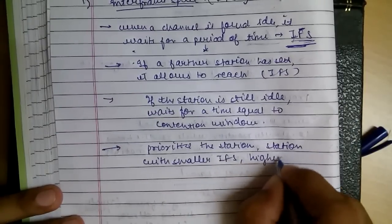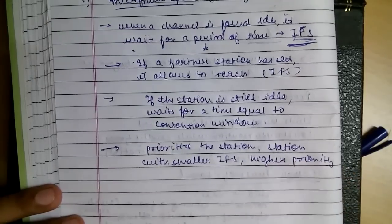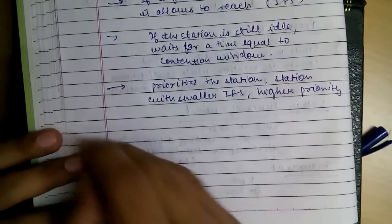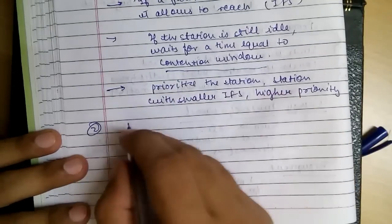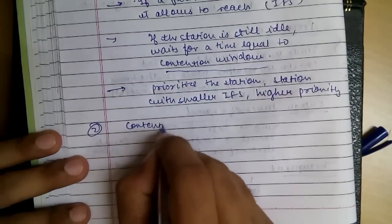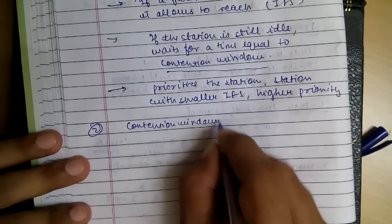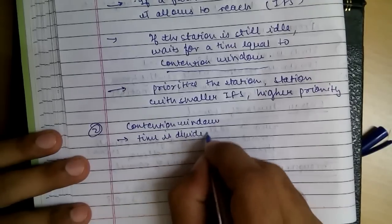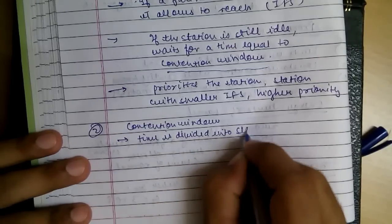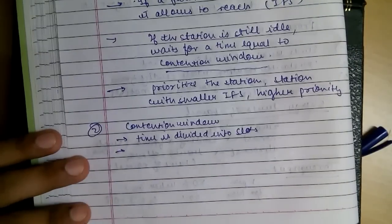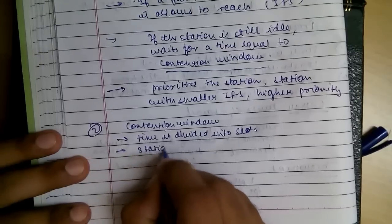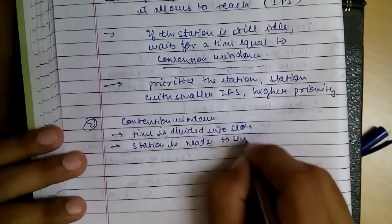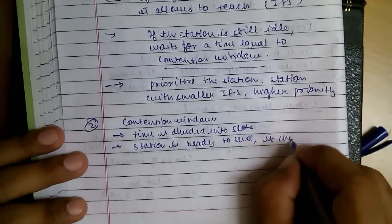So this is the first strategy. The second one is contention window. Contention window is divided into slots, and when a station is ready to send, that is after this IFS time, it chooses a random number of slots.